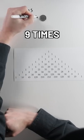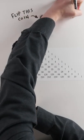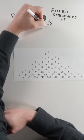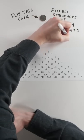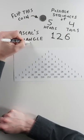If I flip this coin 9 times, I can tell you exactly how many possible sequences of 5 heads and 4 tails exist. 126. Because I've got Pascal's triangle.